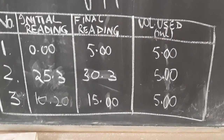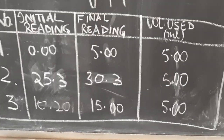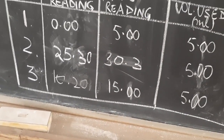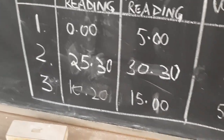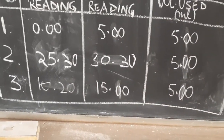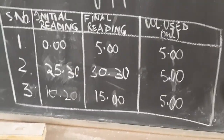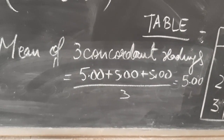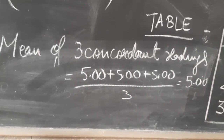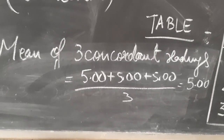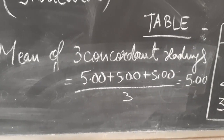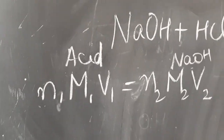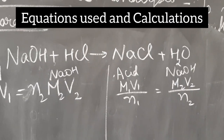Always write your readings to two decimal places. Zero is written as 0.00, five as 5.00, 30.3 as 30.30, and so on. Below the observation table, write the mean of three concordant readings. Concordant readings are those which differ by no more than 0.05. All three readings should ideally be identical or differ by a maximum of 0.05.